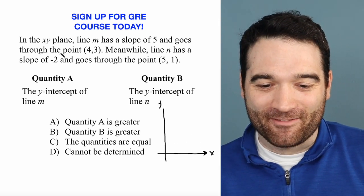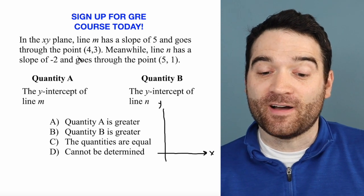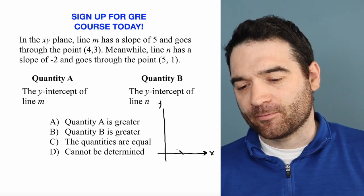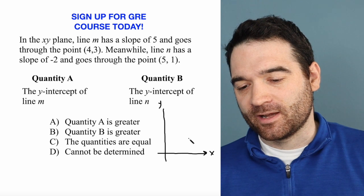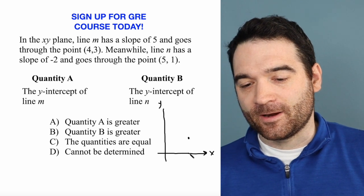And what do I have? I have one line that has a slope of 5 and goes through the point (4, 3). So, the point (4, 3), I'm just kind of sketching right now, is right about there.